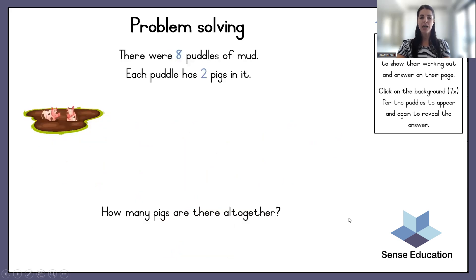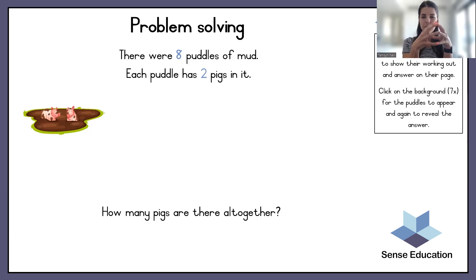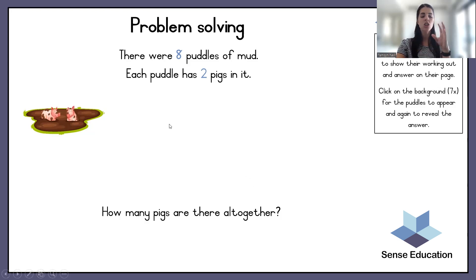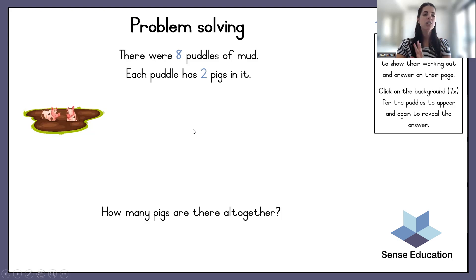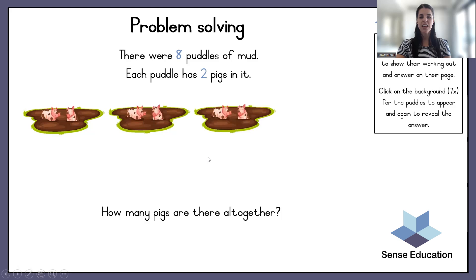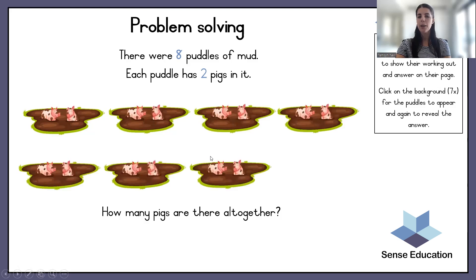There were eight puddles of mud; each puddle has two pigs in it. How many pigs are there altogether? There is a puddle of mud with two pigs, then another puddle with two pigs, and there are eight of these. Draw it on your page and show your working out. There are the eight puddles, and each one has two pigs. How many pigs are there altogether? There are sixteen pigs.